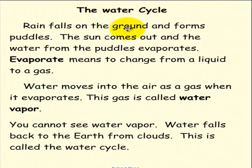The Water Cycle. Rain falls on the ground and forms puddles. The sun comes out and the water from the puddles evaporates. Evaporate means to change from a liquid to a gas.